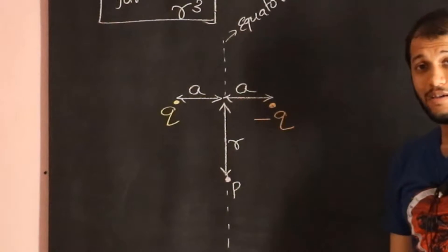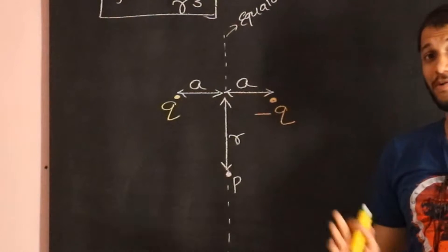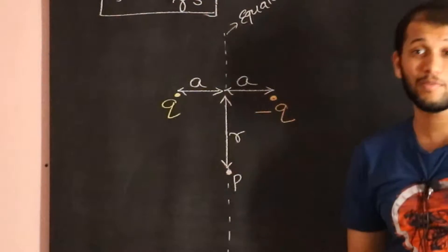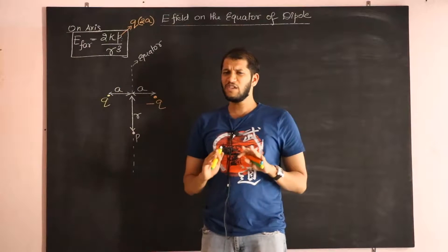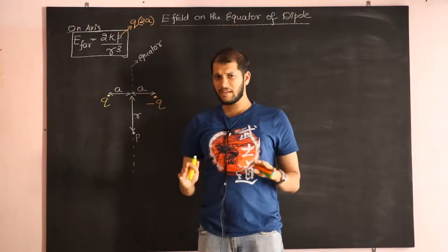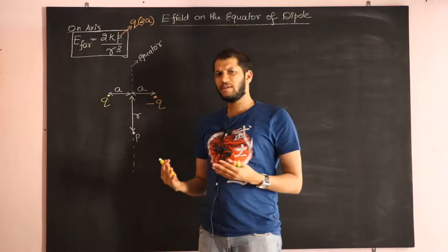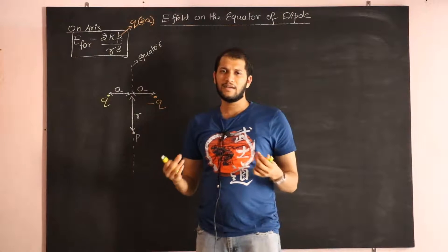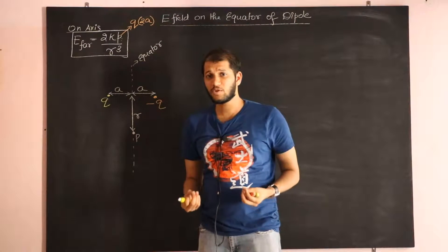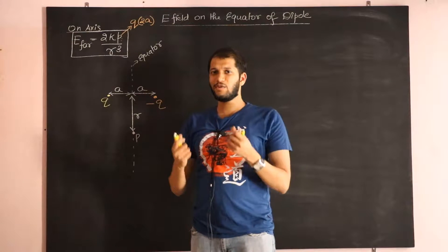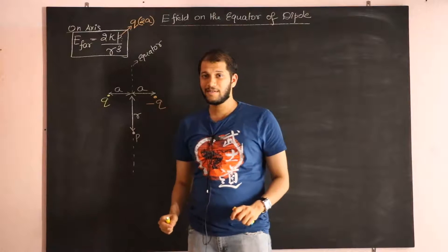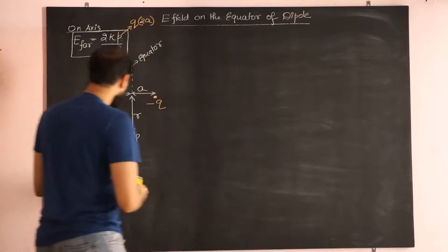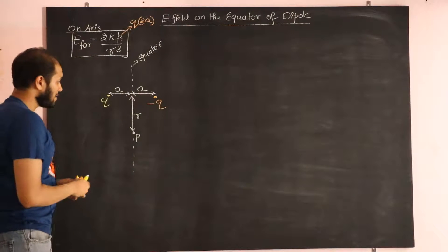Now really you should be able to do this yourself because we have solved problems in two dimensions in Coulomb's law and electric fields. Feel free to pause this video and start doing this, and if you get stuck in between, play it until you get comfortable to solve it yourself. Let's see what the electric field looks like, and eventually we'll go far away on the equator.